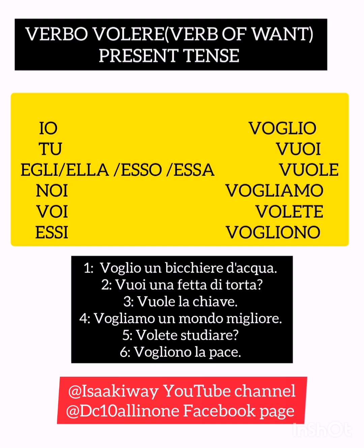Then the last one: 'loro vogliono'. You will see sometimes they use 'loro' and sometimes 'essi', and they bracket them — they are talking about the same thing. When you see 'loro' or 'essi', they mean the same thing. Here I put only 'loro', but you can use them interchangeably. So 'loro vogliono' means 'they want'. Then further down we get some examples.